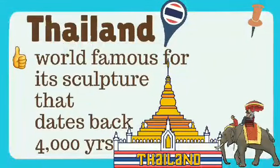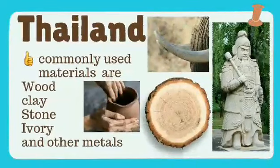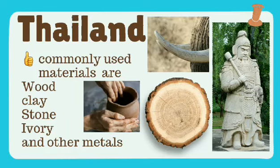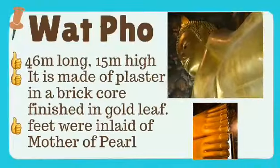Thailand is world famous for its sculpture, which dates back 4,000 years. Commonly used materials in Thai sculpture include wood, clay, stone, ivory, and other metals. The most famous sculpture in Thailand is found at the Wat Pho Temple.